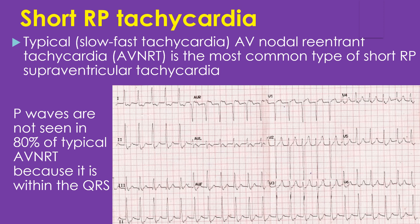Accessory pathway-mediated atrioventricular reentrant tachycardia is the other form of short RP tachycardia, in which the P wave falls at the end of the QRS.